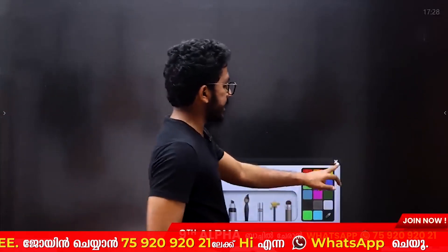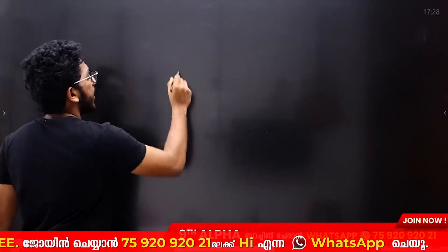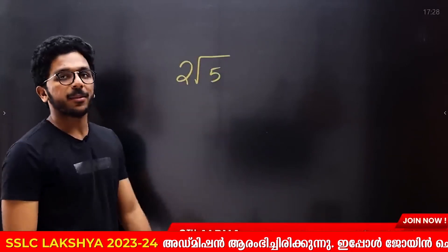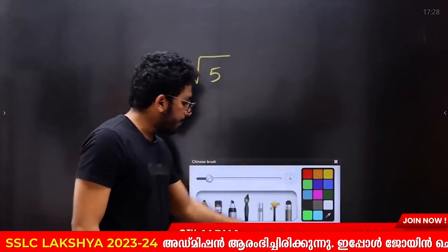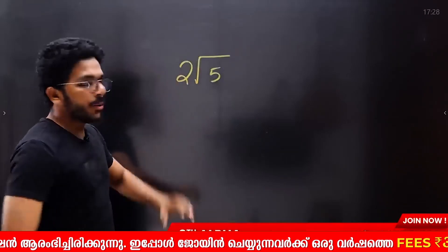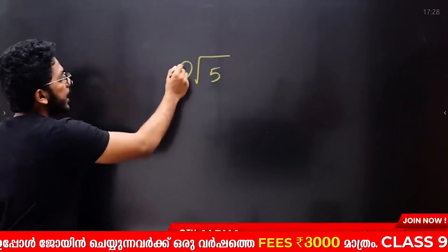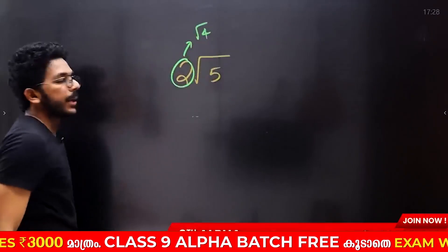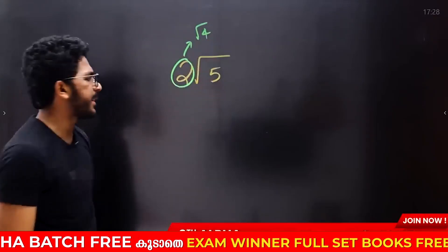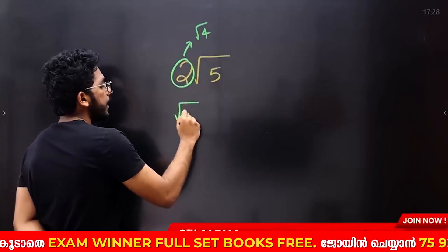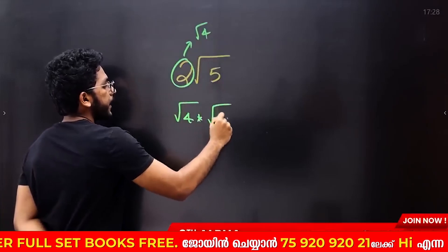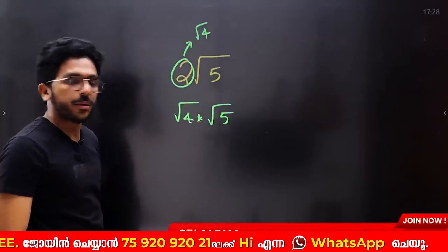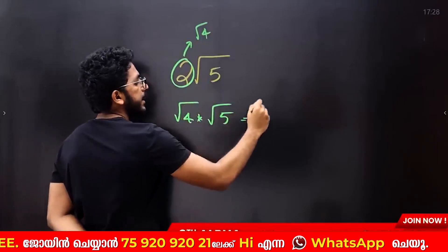Now let's take a look at some simplifications. 2 root 5. Now let's simplify this. What is 2? If you have root 4, it is root 4. So root 4 and root 5 can be written together — root 4 into root 5.